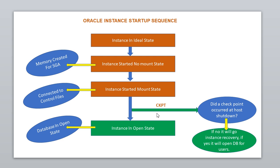This checkpoint rule is very important. You need to explain it carefully: whether the checkpoint occurred or not during the last shutdown. Once the Oracle instance is in open state, any user can connect to the database. Until the database is not in open state, no users can access it.